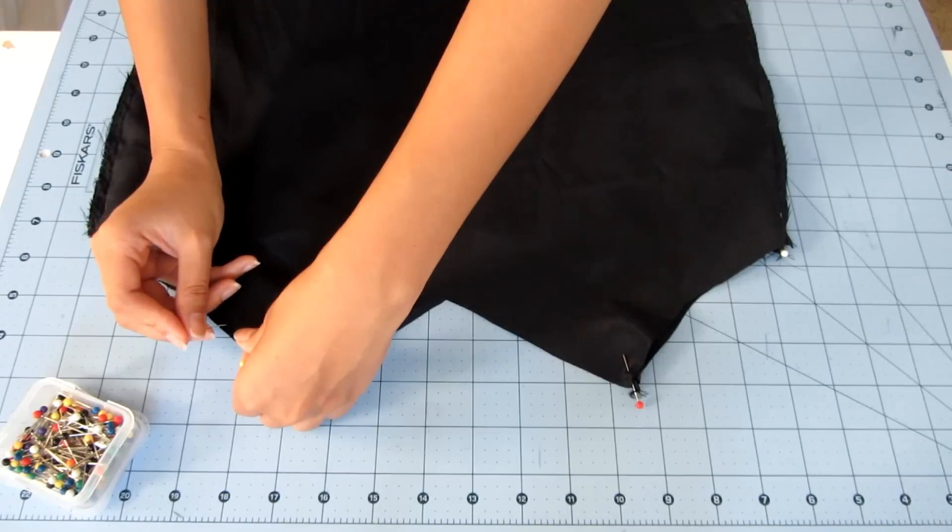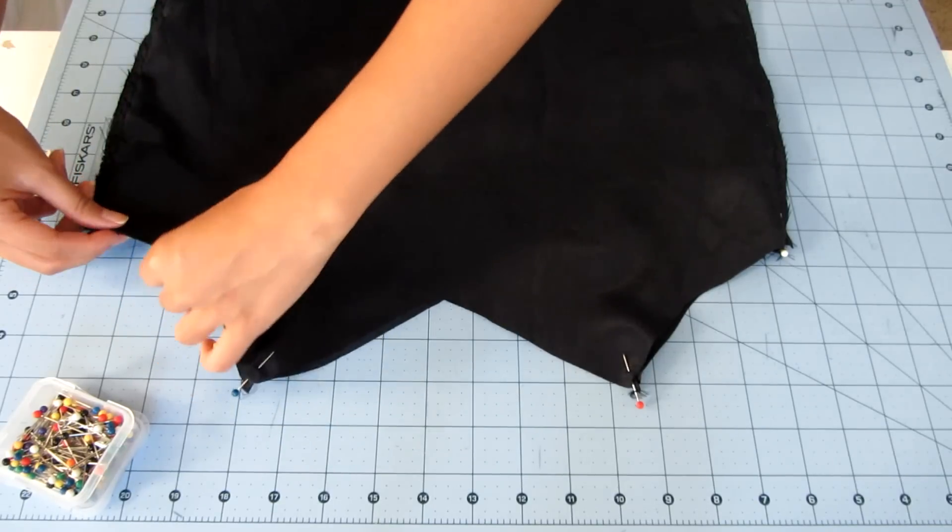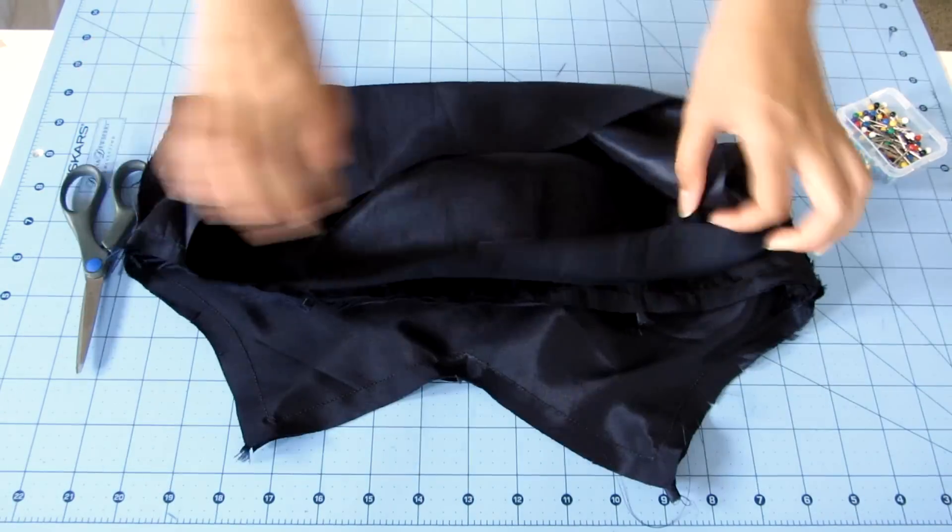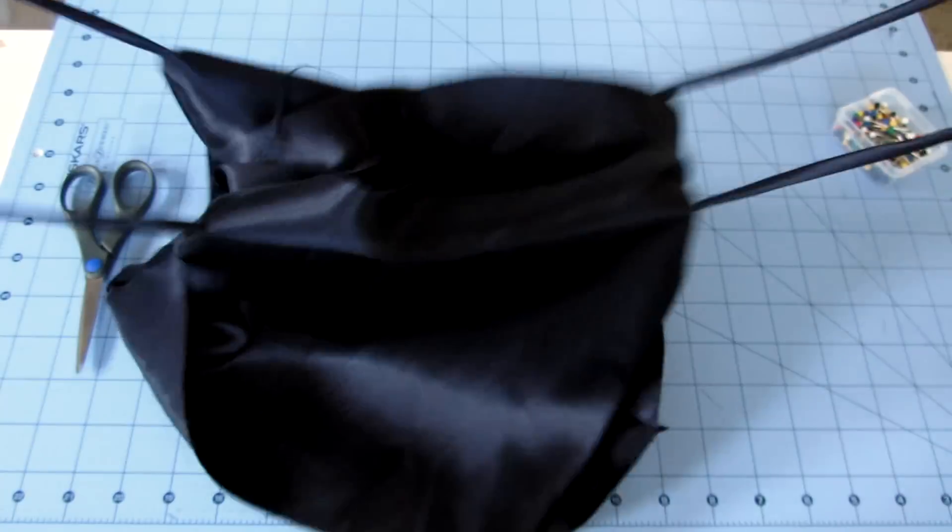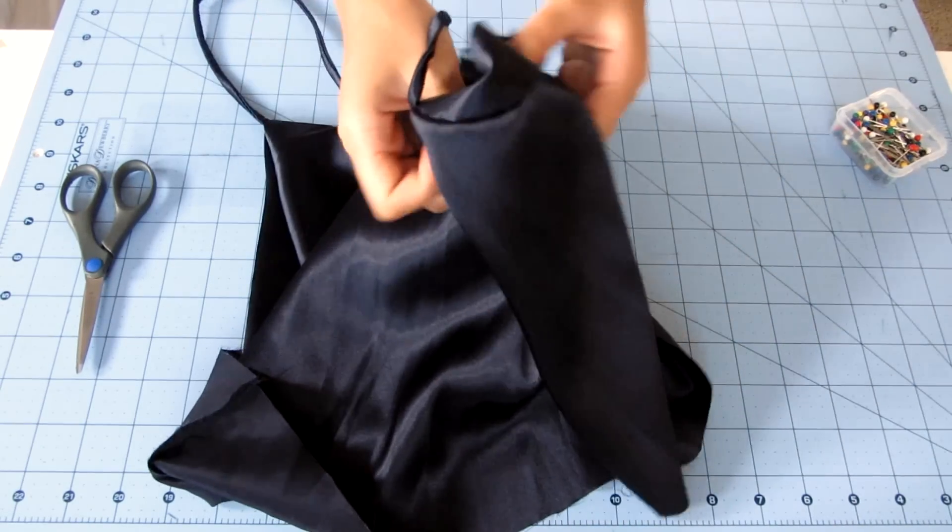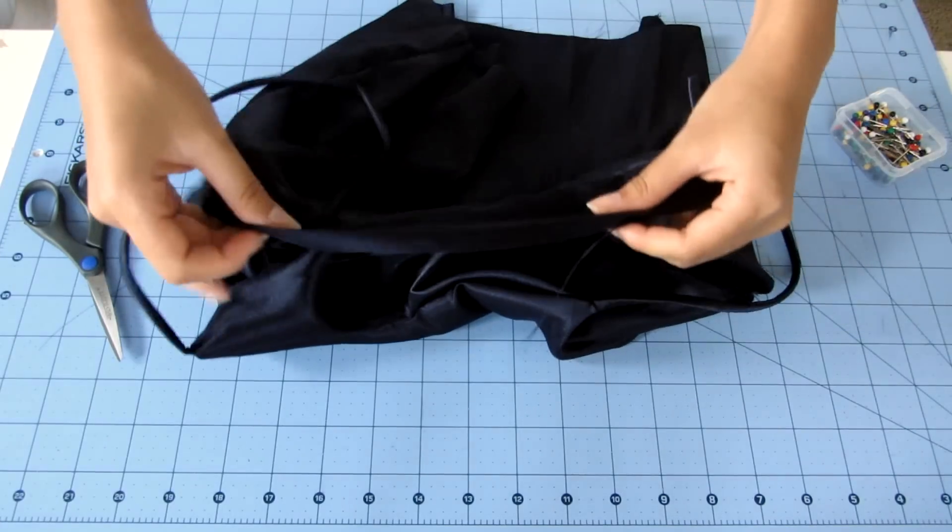Then sew around the top of the cami using a straight stitch. After sewing, snip along the seam allowance of any curved edge and also the points of the triangles, which I forgot to do but do that. You can also use a zigzag stitch to prevent the fraying of the seam allowances.